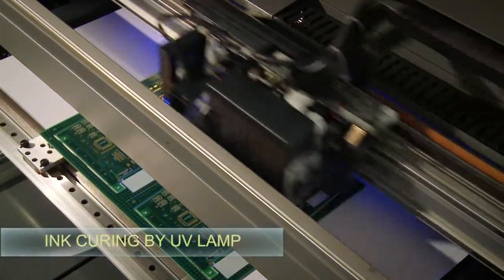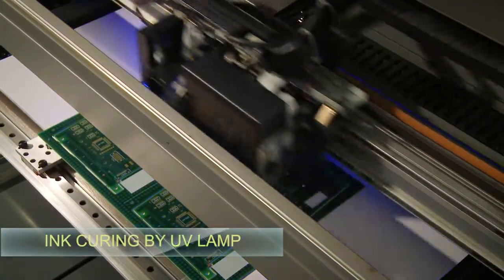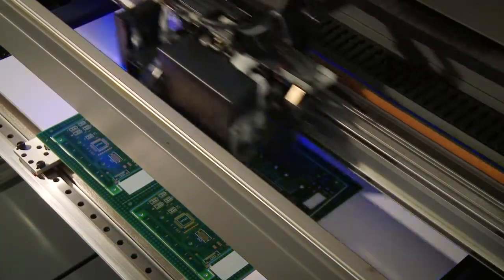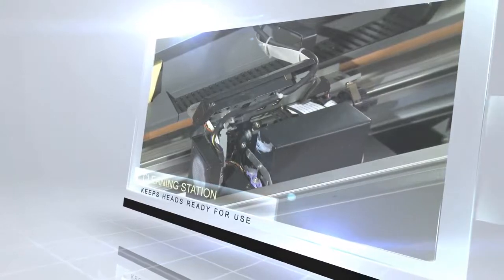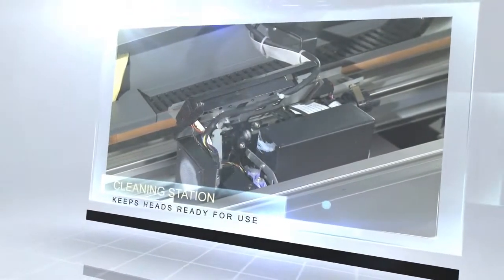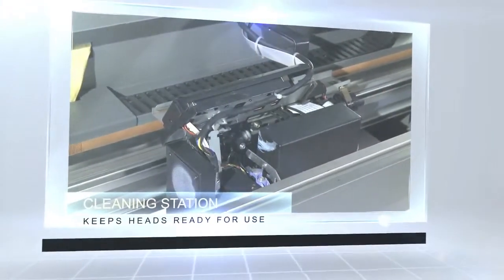Ink curing is achieved with the use of a UV lamp. To control the optimal condition of the heads, the engineers of CircaPrint develop their own cleaning station, which makes sure that the heads are always ready for use, without compromise.